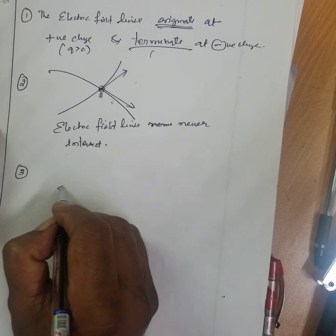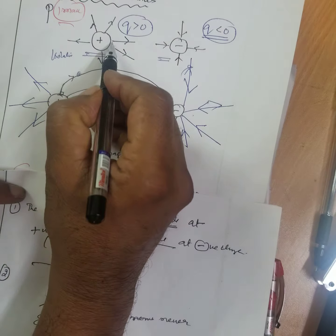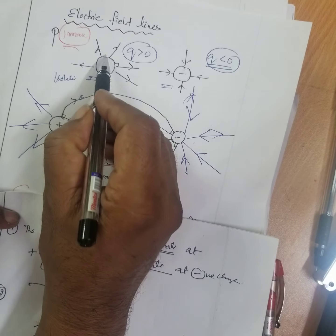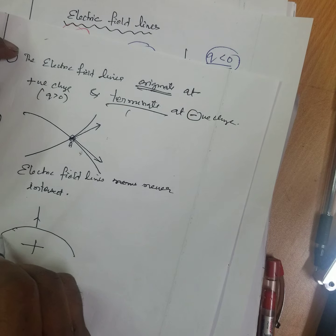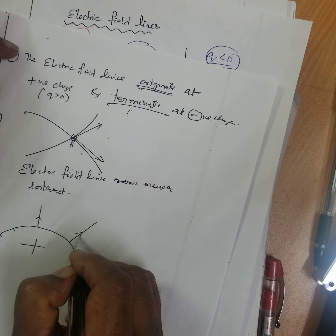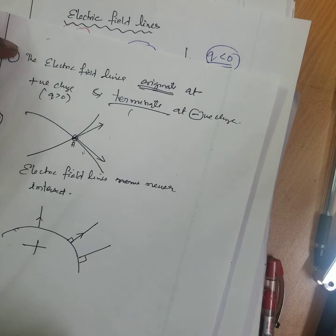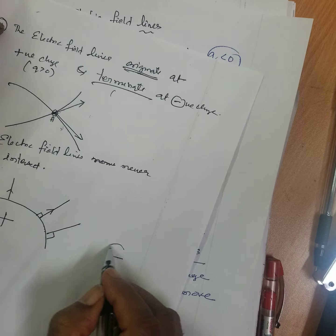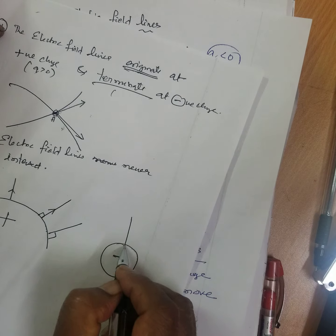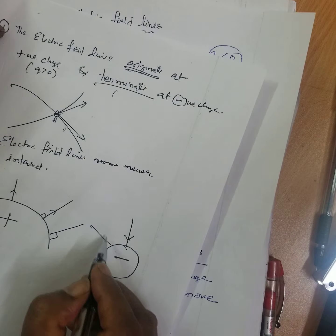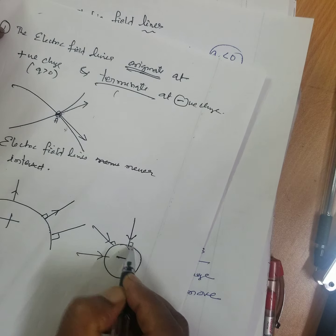Third property: electric field lines are always perpendicular to the surface of the charged conductor. For a positive charge, the lines emerge perpendicular to the surface. For a negative charge, the lines terminating at the surface also arrive perpendicular to it.